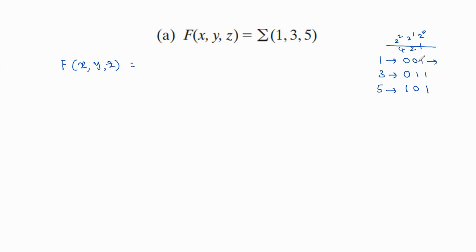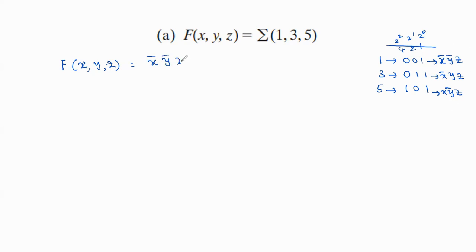For SOP form, 0 means complement of the input variable and 1 means normal form of the input variable. Therefore, 0, 0, 1 means x'y'z. Similarly, 0, 1, 1 means x'yz. And 1, 0, 1 means xy'z. Now we should write the SOP form using these three product terms. Sigma means a summation operator, so we add all product terms: f(x, y, z) = x'y'z + x'yz + xy'z. This is the canonical SOP form.